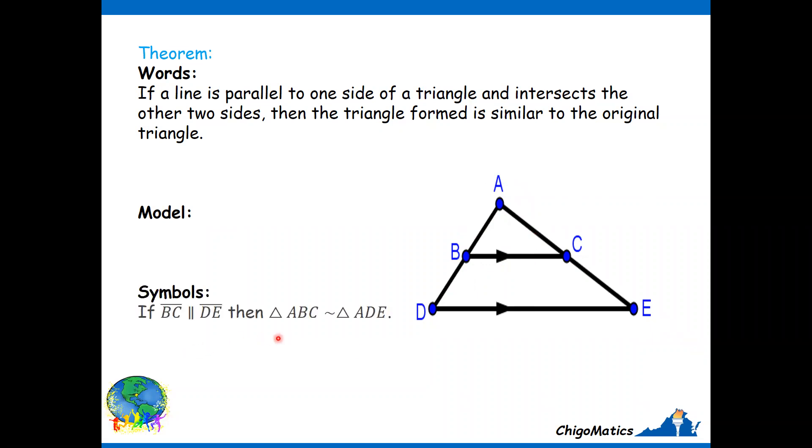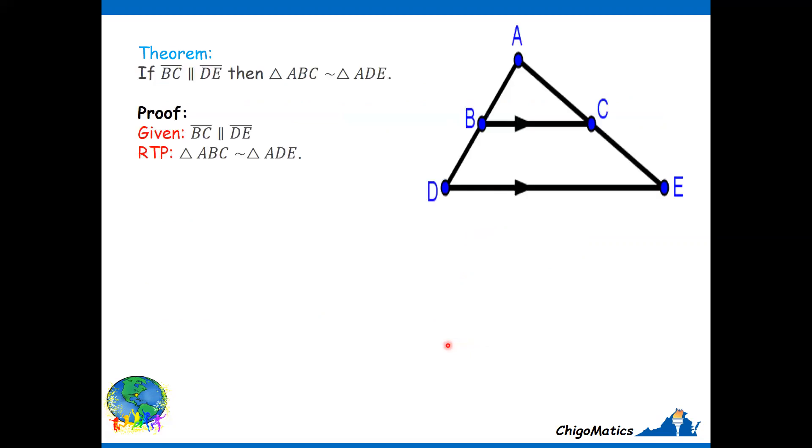In symbolic form, if BC is parallel to DE, that's our hypothesis, then we can certainly conclude that triangle ABC is similar to triangle ADE. The proof of this theorem is as follows.